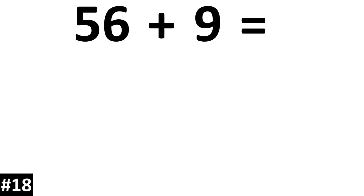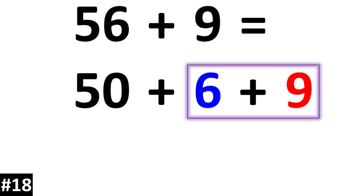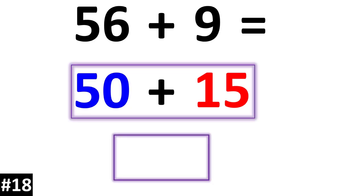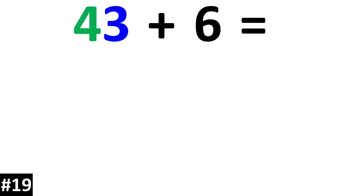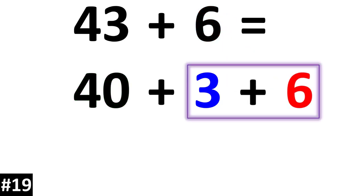56 plus 9. 56 is the same thing as 50 plus 6. If we add the 9, 6 plus 9 is equal to 15. 50 plus 15 is equal to 65. Next, 43 plus 6. 43 is the same thing as 40 plus 3. If we add the 6, 3 plus 6 is equal to 9.